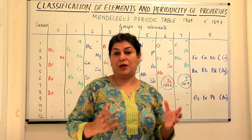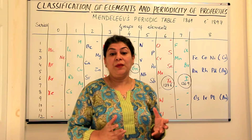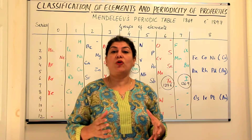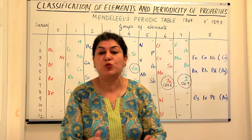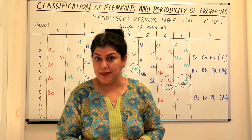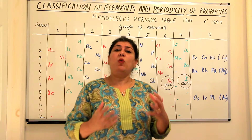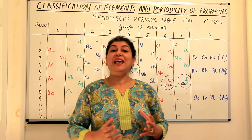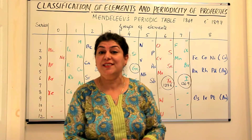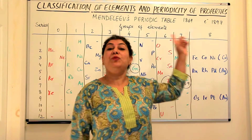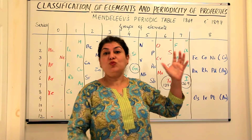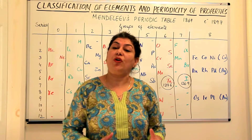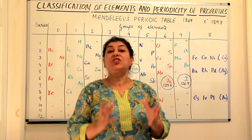Today we do not follow Mendeleev's periodic table — we follow the modern periodic table. But Mendeleev's periodic table was a massive step towards the classification of elements. If we had to choose just one genius in all of chemistry, it would be Mendeleev, because what he did was a major leap in our knowledge of chemistry.